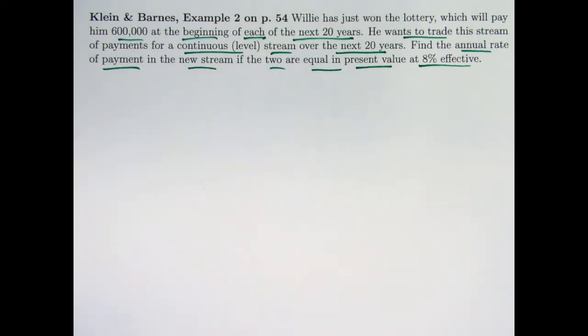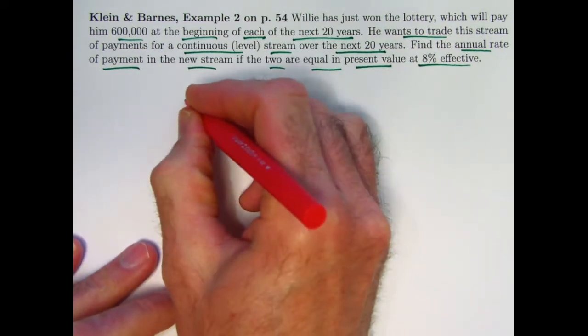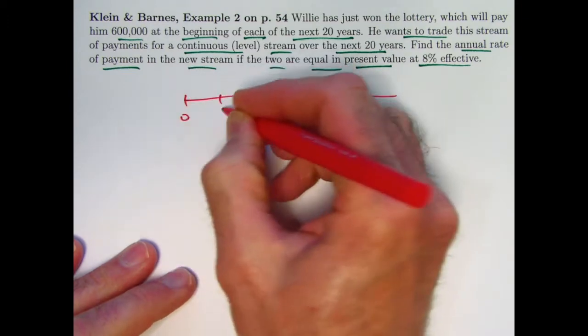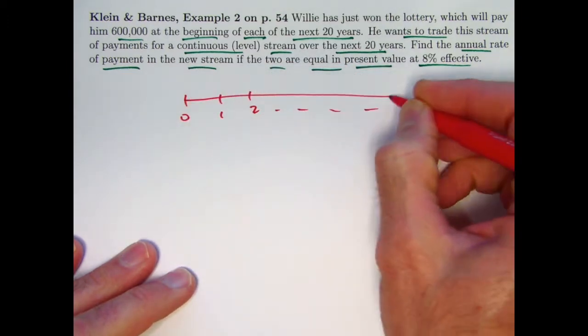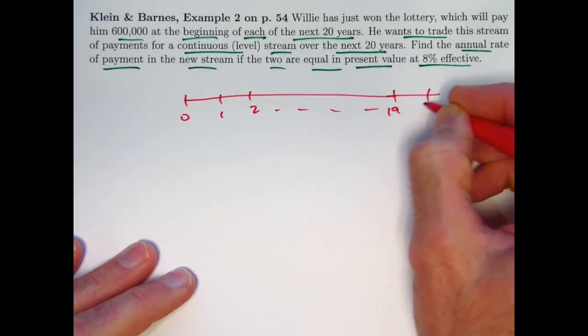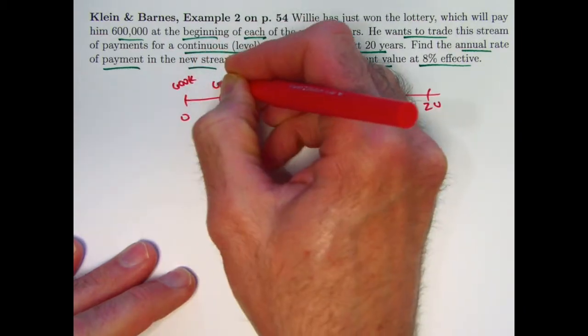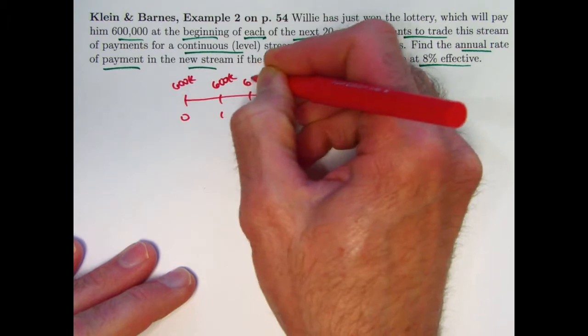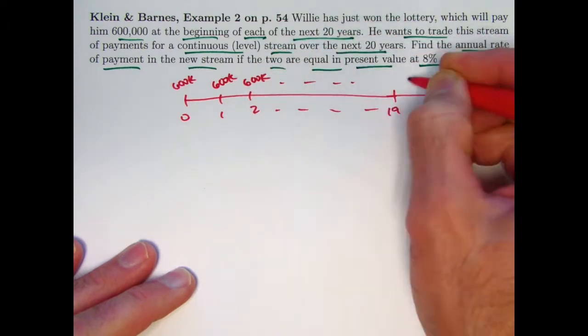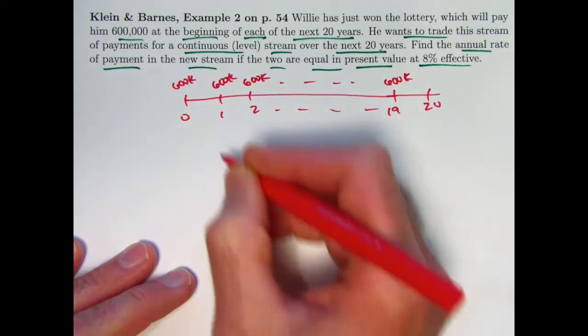All right, now you don't really need to draw a timeline here. Maybe I will just out of habit. You've got this 20-year period. He's getting $600,000 at the beginning of each year for 20 years. That's an annuity due. Last payment at time 19.